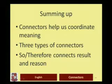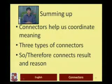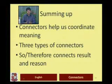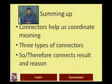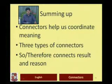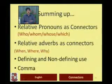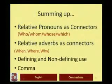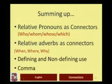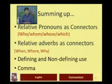Connectors help us coordinate meaning. There are three types of connectors: coordinating conjunctions, adverbial conjunctions, and subordinating conjunctions. 'So' and 'therefore' connect result and reason, and you can compare them with other connector words such as 'because' and 'as.' Then we have relative pronouns as connectors, and relative adverbs: when, where, and why. We also covered defining and non-defining use.